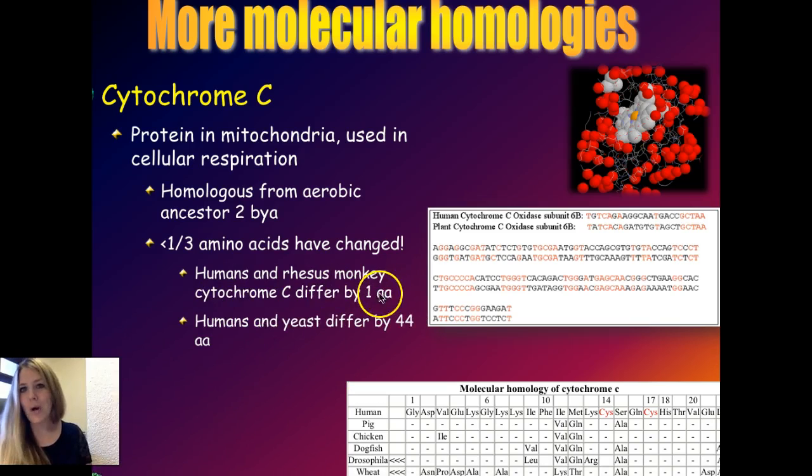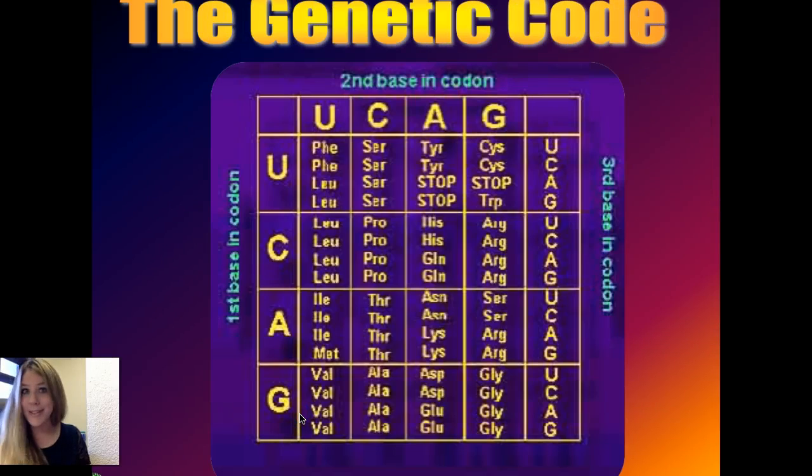And if you look at very closely related species like the human and the rhesus monkey, our cytochrome C amino acid sequence only differs by a single amino acid out of many different amino acids that make up that protein. And here's the cytochrome C protein right there. So how cool is that?